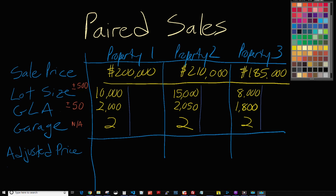Most of you already understand what paired sales is, but I'll briefly cover it. We have three properties with a few pieces of information: sale price, lot size, livable area, garage count, and a section for adjusted price. The adjustment tool will go through and look for properties that are perfectly matched or identical except for the feature we're currently analyzing. When analyzing lot size, it takes the first property and compares it against the next one.